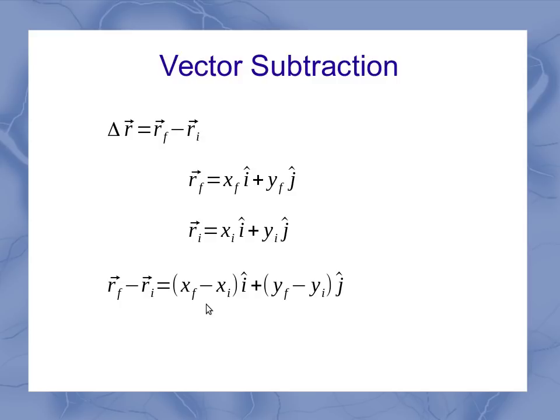But when I come back and look at what these things mean, that final position minus the initial position is my change in position. The x final minus x initial is delta x, and the y final minus y initial is delta y. So I see that my change in position has components of the change in x and the change in y, respectively.